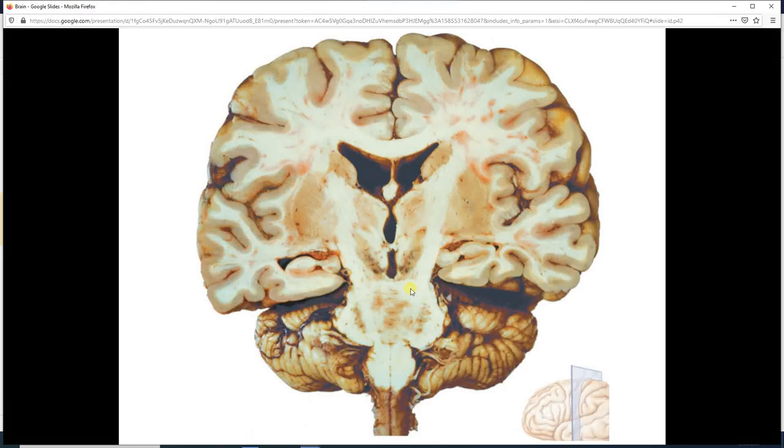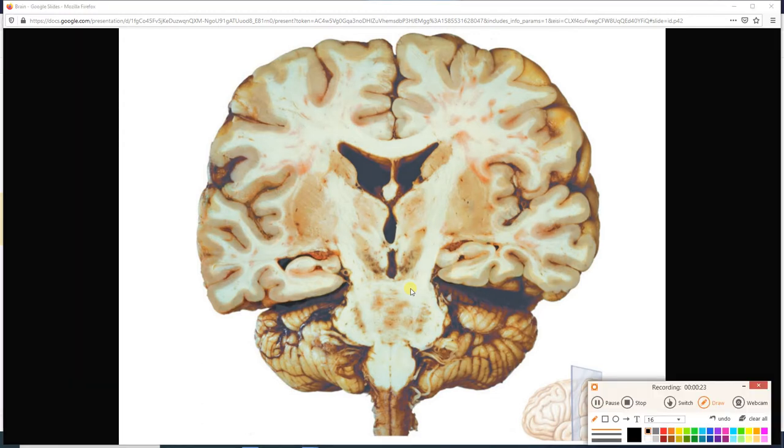Welcome to brain mini lecture number six. Last time we met we were talking about the three types of white matter fibers. They were association, commissural, and projection. Now if we look at this frontal section of a brain we are going to be able to see all three.